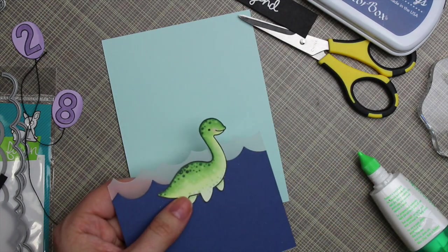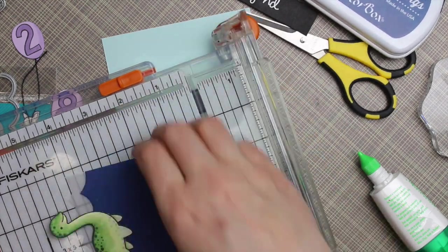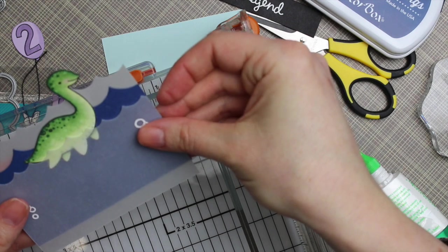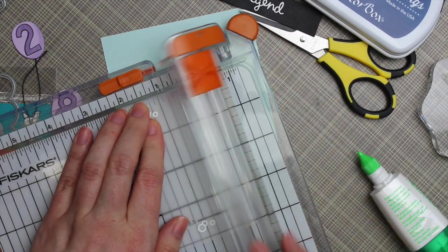So once I got that adhered, I was like, yeah, it's way too high up on the card. So I just grabbed my paper trimmer and trimmed off about a quarter inch or so of the cardstock and vellum there and then did the same thing to the top piece of vellum. So just trimmed that off so that it was straight.